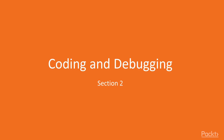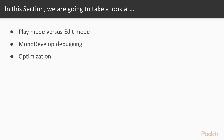In section 2 of the course, we're going to explore the difference between play mode and edit mode in more depth. We'll see how we can use MonoDevelop to debug our application and find errors, as well as how we can optimize our program.